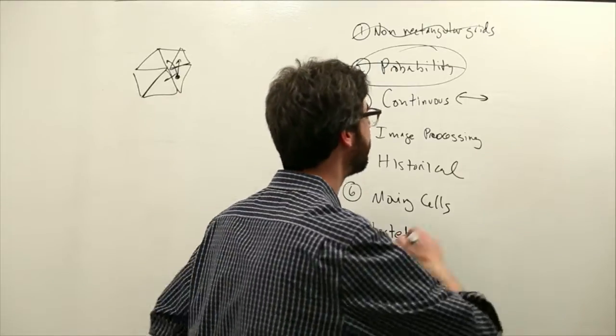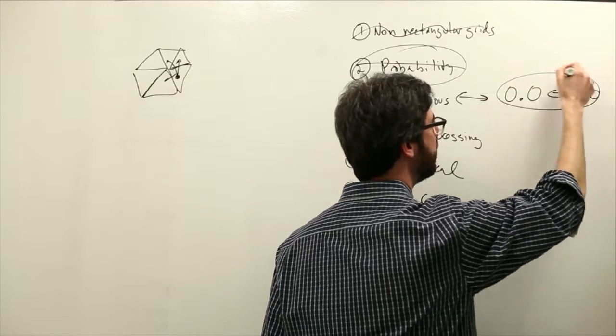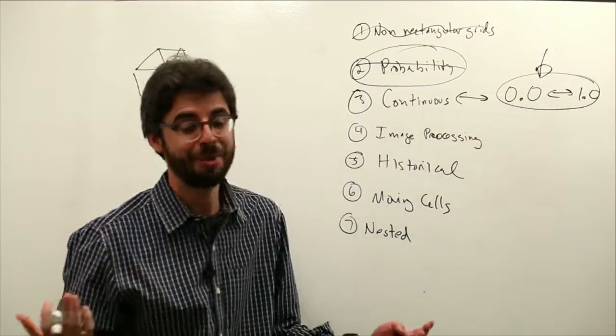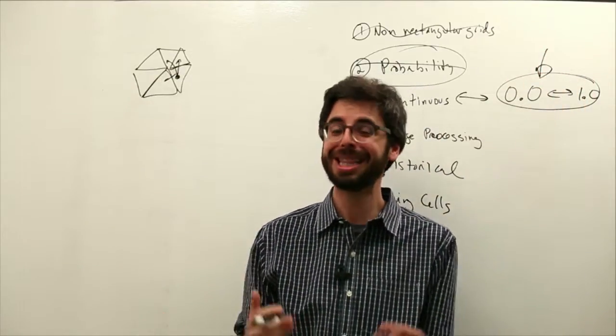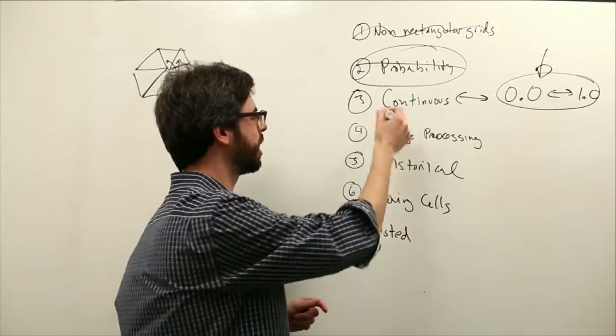But something you could think about is what if the state is a floating point number between 0 and 1.0. The reason that could be useful is a lot of things we do in computer programming, the data could be mapped to numbers between 0 and 1.0.